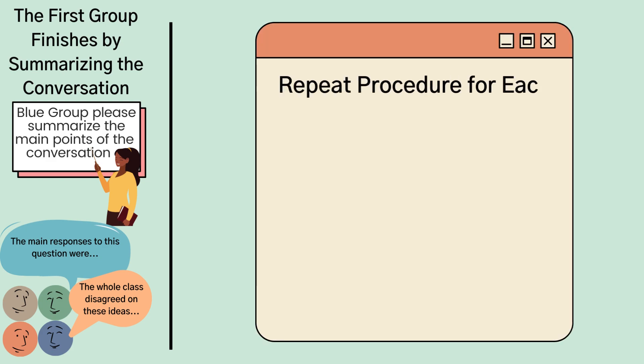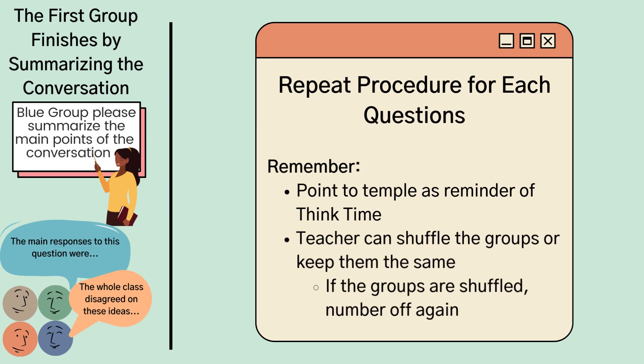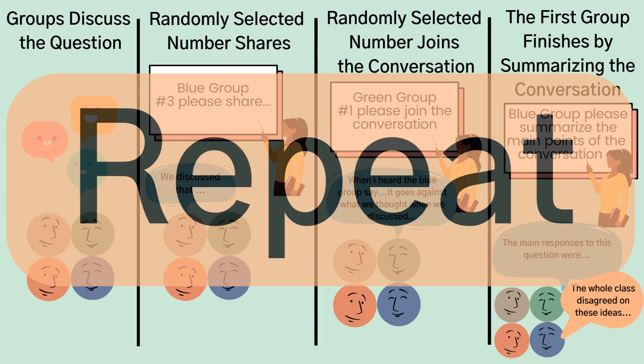Remember, when posing the next question, pointing to the temple reminds students this is think time only. At this point, the teacher can shuffle groups or keep them the same. If groups are shuffled, students number off again. The teacher repeats the steps until all questions have been discussed and summarized.